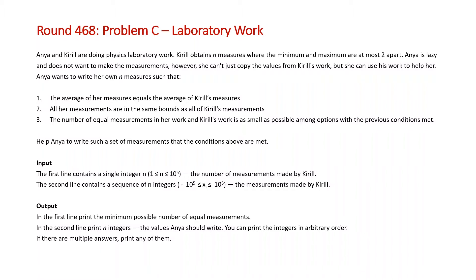The input conditions are: the first line will contain an integer N between 1 and 10^5, which is the number of measurements made by Kirill, and the second line will contain N integers with values between -10^5 and 10^5, which are the actual measurements made by Kirill.